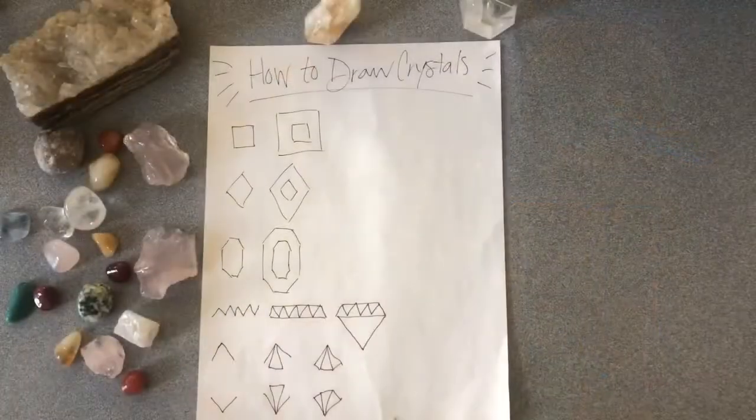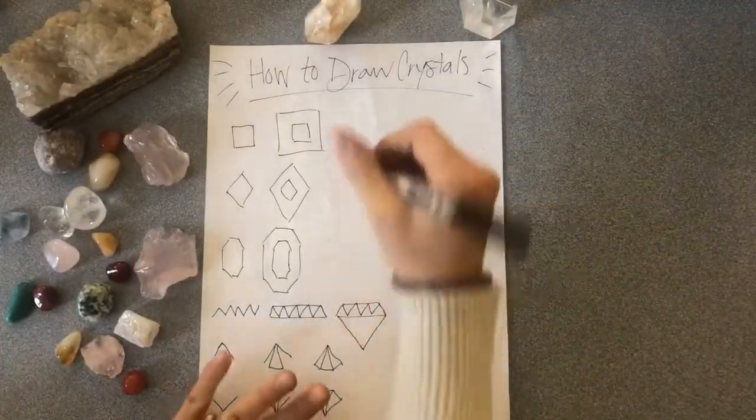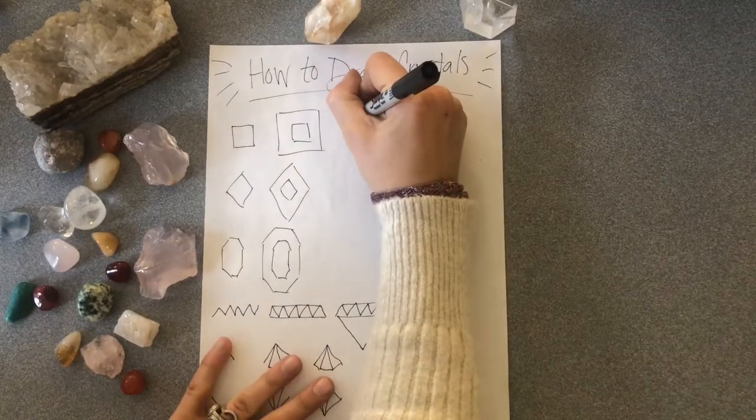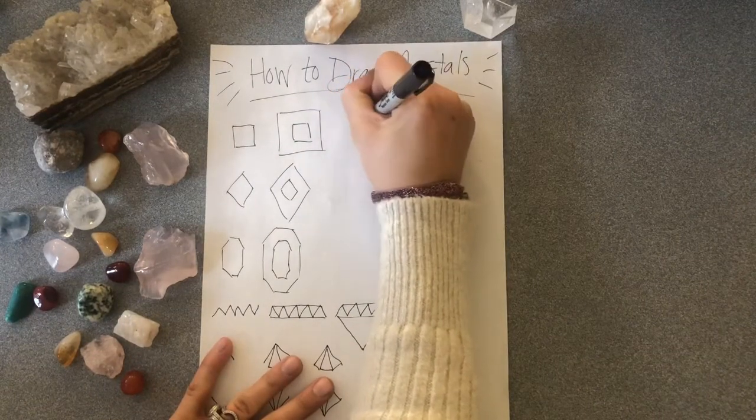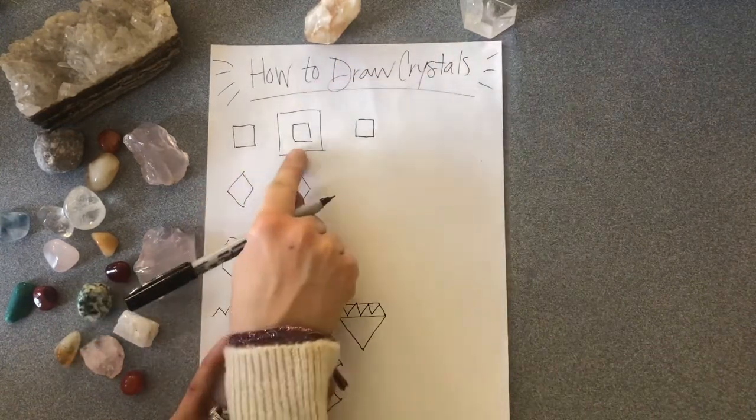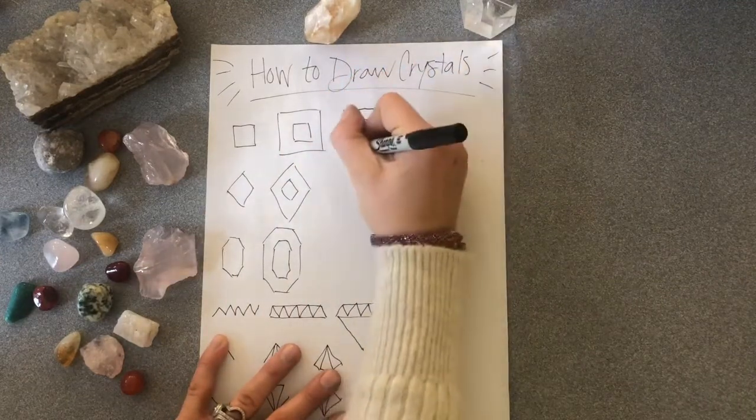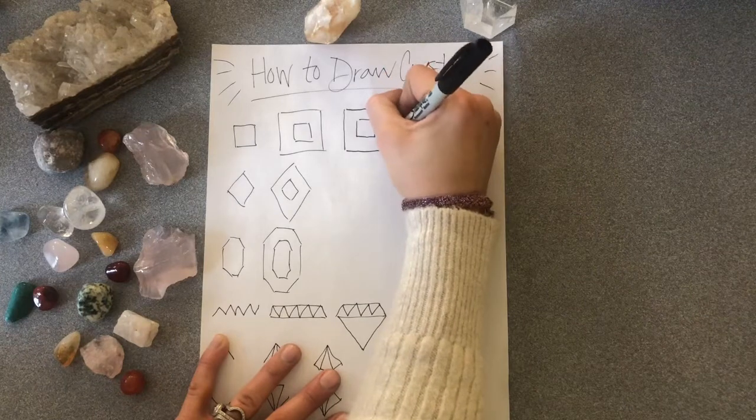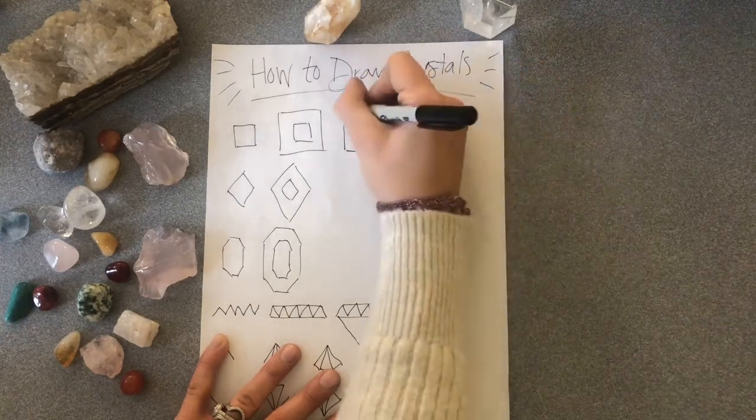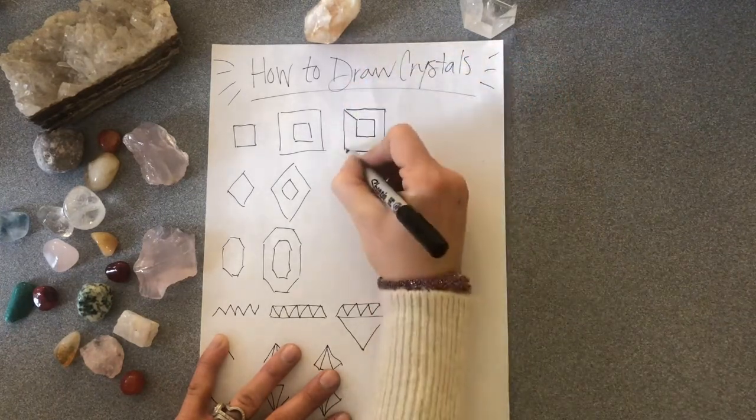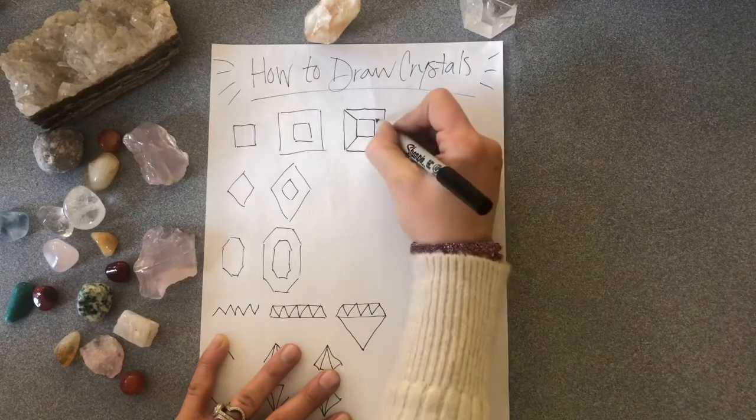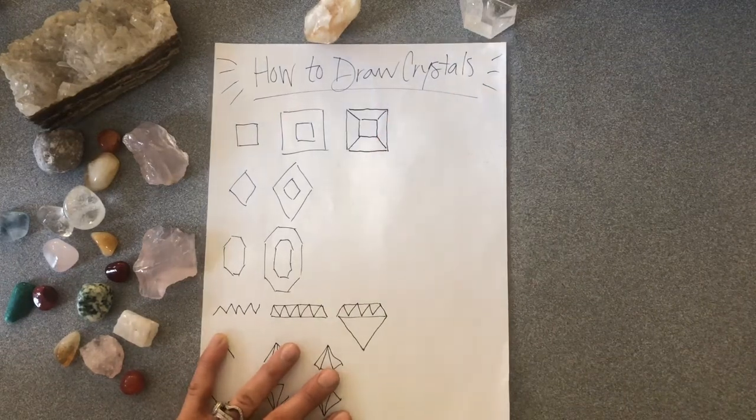Once you have your piece of paper, you can use anything to practice drawing. I like to start with a pencil. I'm going to use a marker so you can see better, but you're going to start with one square and then do a square around it. Next, connect each corner to each other. You've got your first crystal done.